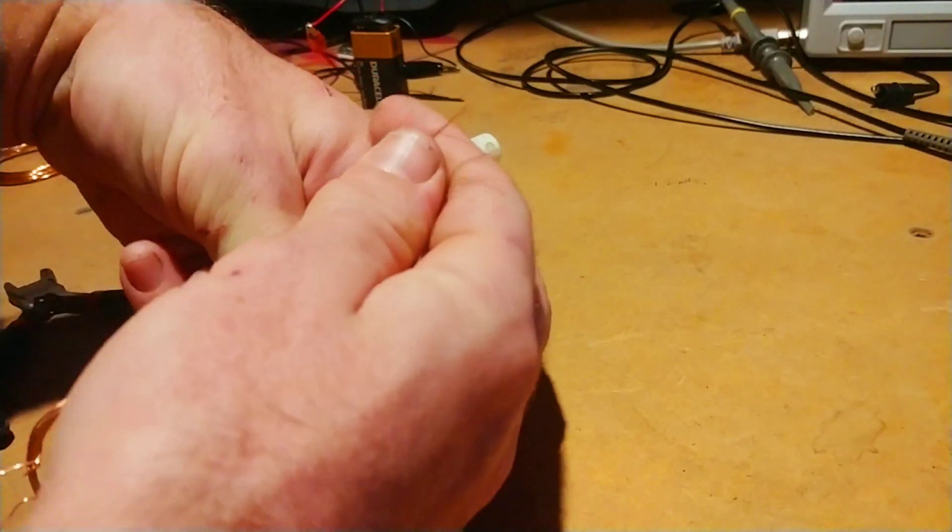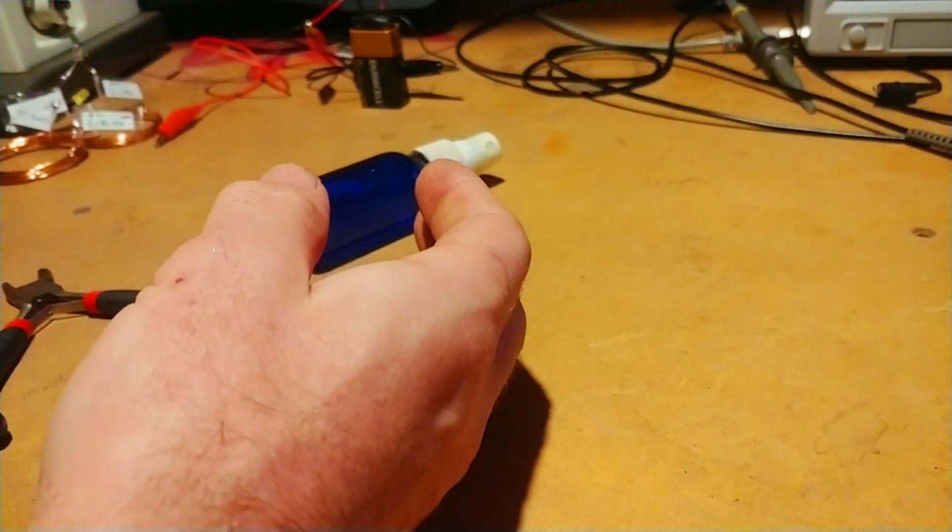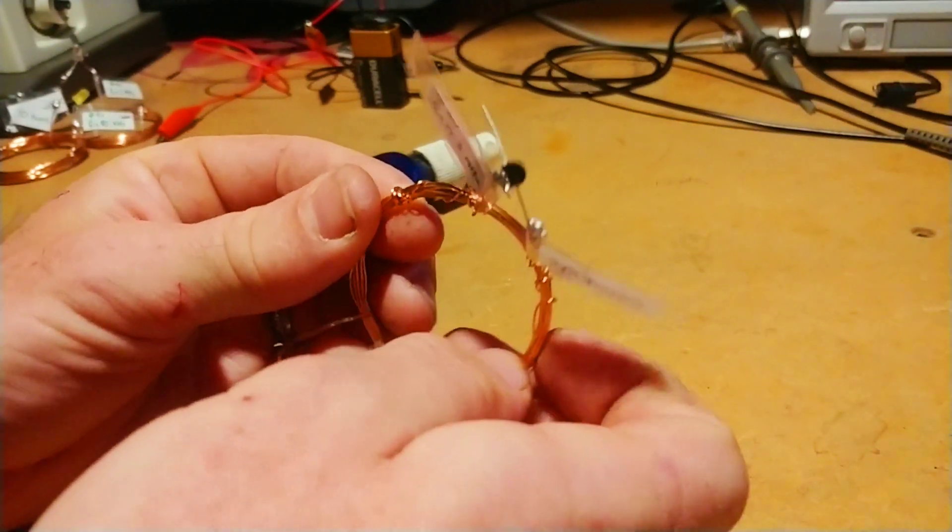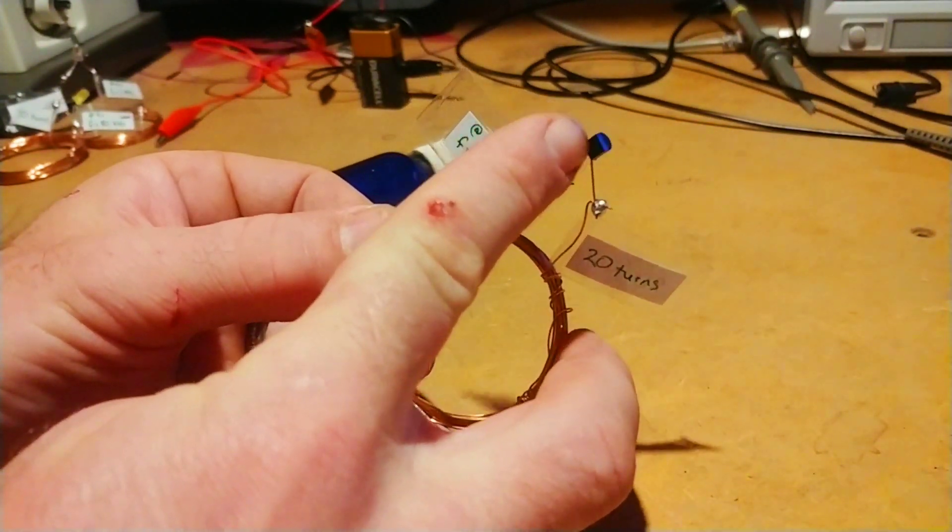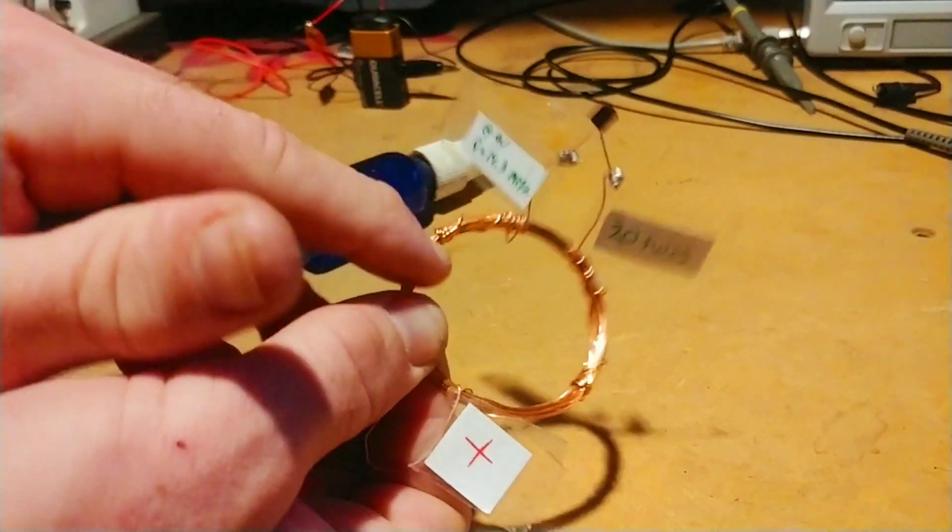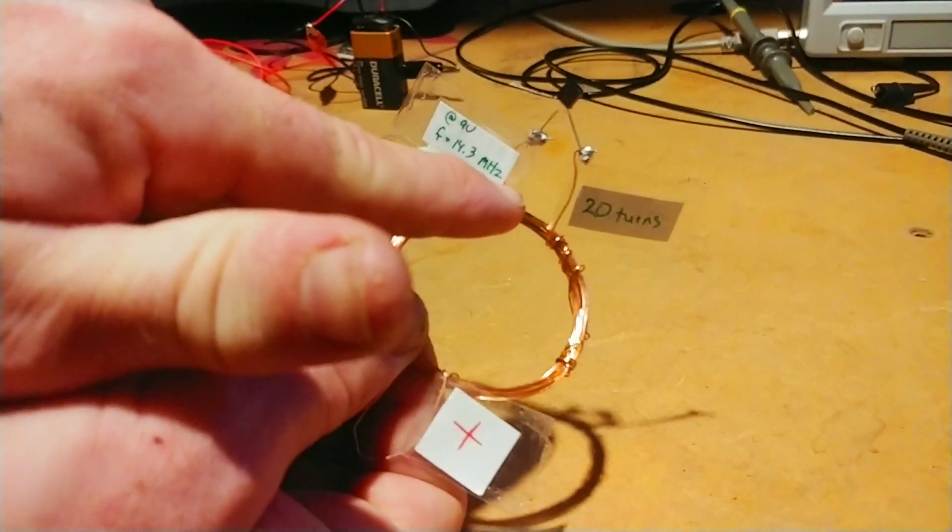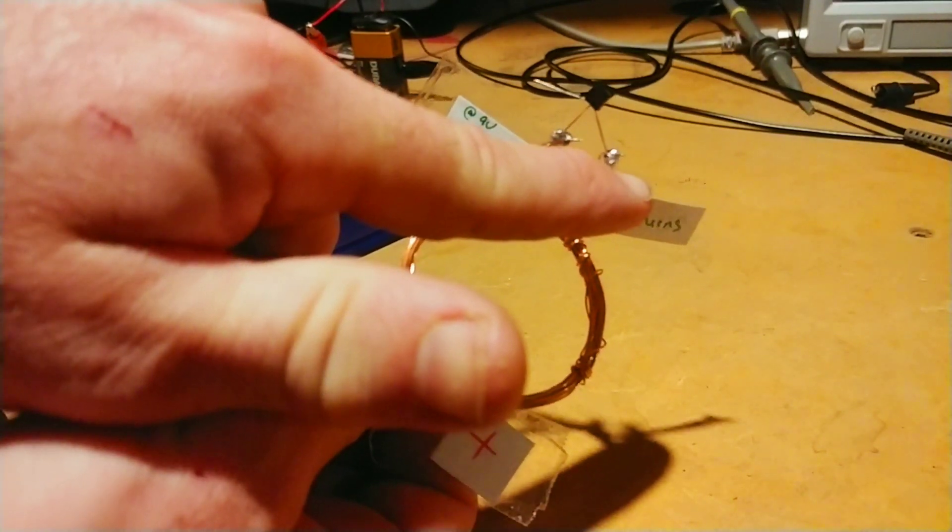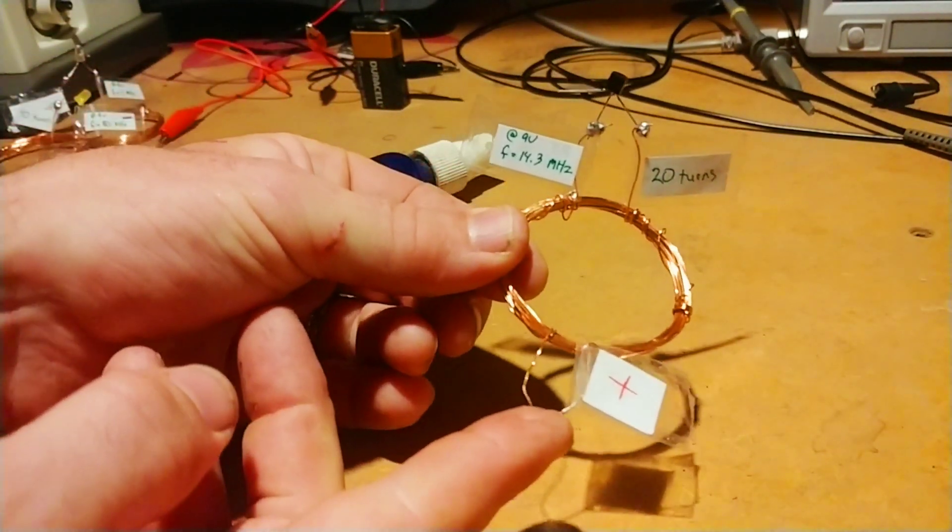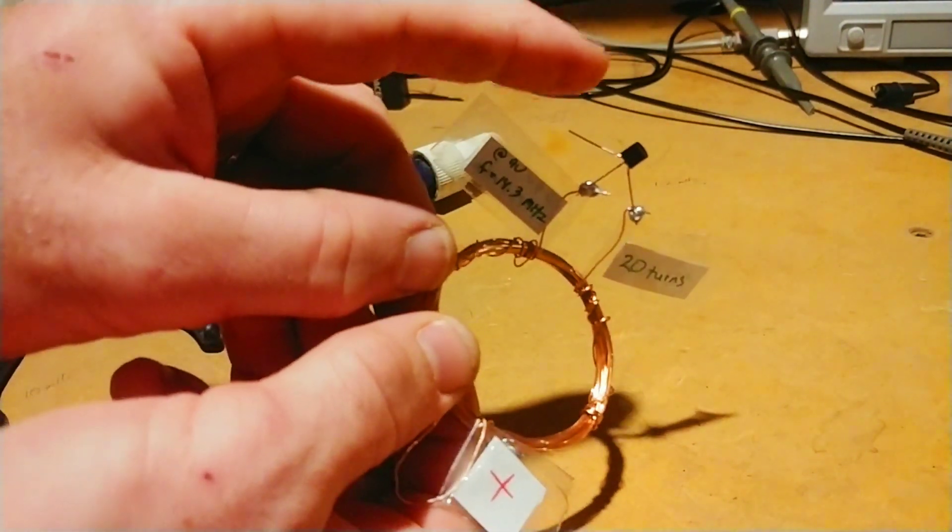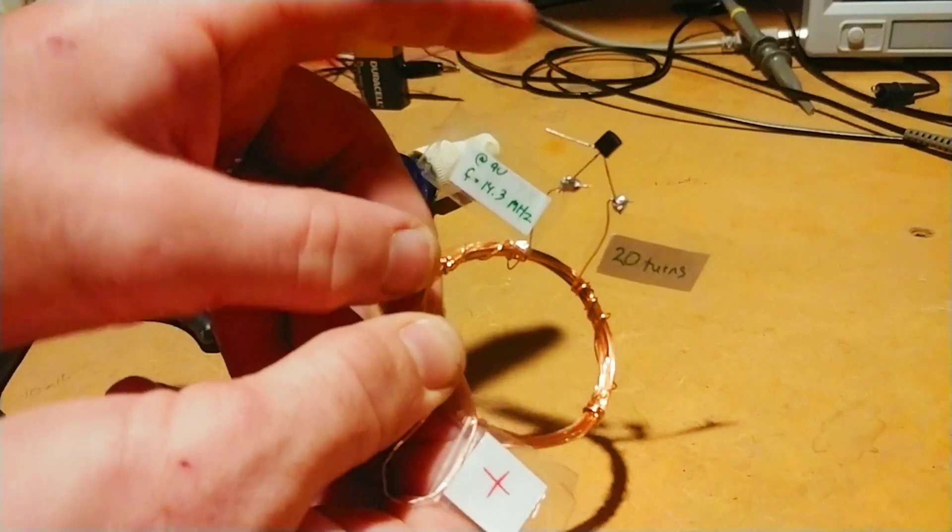You're going to take your transistor, which I'll show you with mine right here. You can see that the flat side is facing us, the round side's on the back. The two sides of your coil are going to go to the base and the collector here. Your center tap is going to be your positive to your battery. And then the emitter right here is going to go to the negative of the battery.